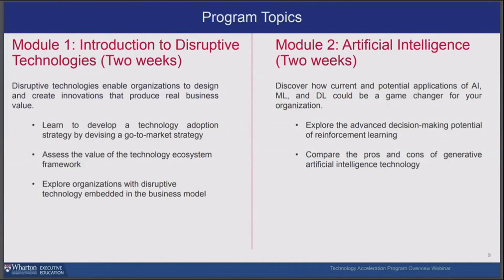Module 2 goes deeper into artificial intelligence — how current and potential applications of AI, machine learning, and deep learning can be a game changer for your organization. We look at case studies from Amazon, pharmaceutical companies leveraging AI to read text, AI-powered ETFs in financial services, and healthcare applications where AI can detect brain tumors at a rate better than a human doctor. We'll explore the advancement of these technologies and the pros and cons of their implications for your organization.